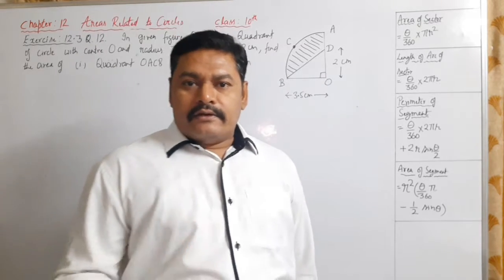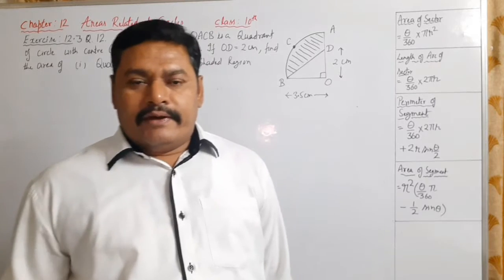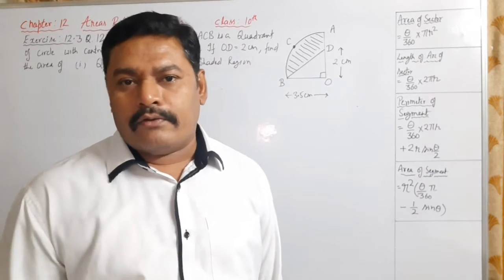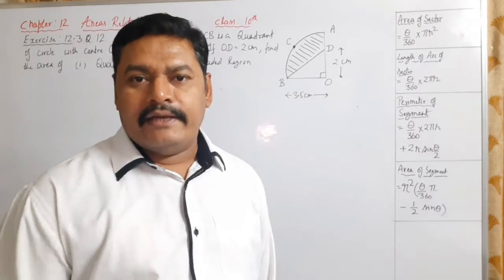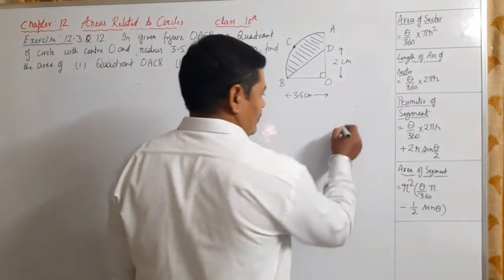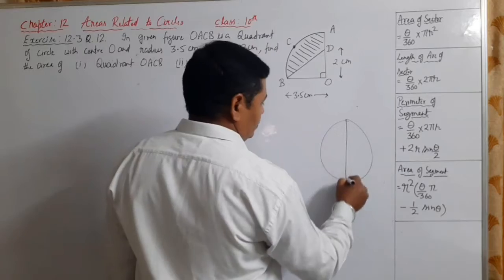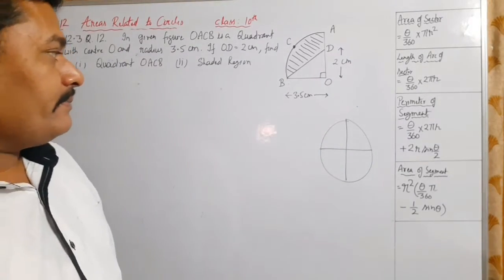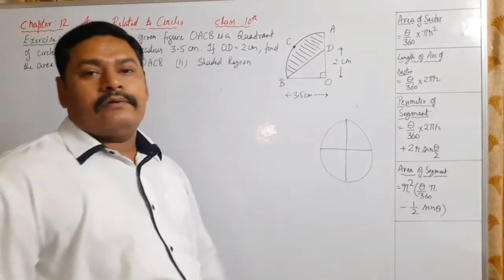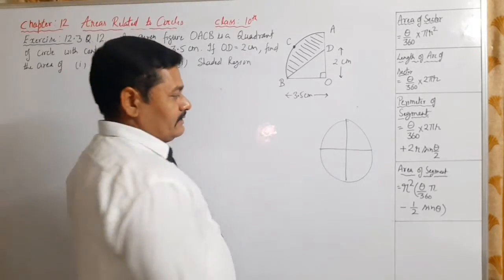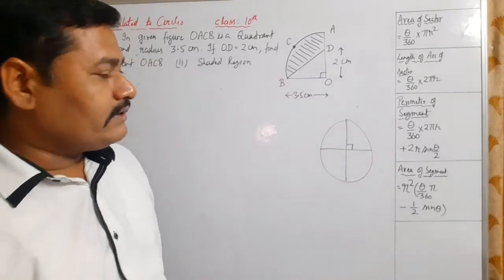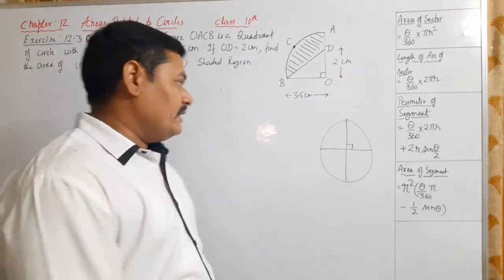To divide a circle into four equal parts, we have to draw two perpendicular diameters. These two perpendicular diameters divide the circle into four quadrants. Since they are perpendicular, the quadrant's central angle is 90 degrees.